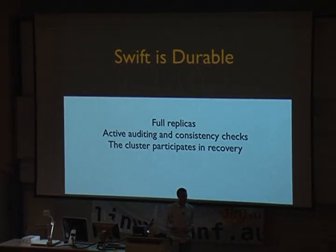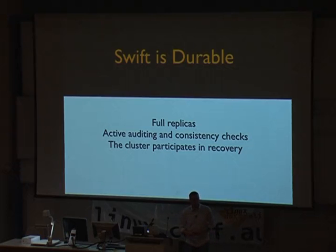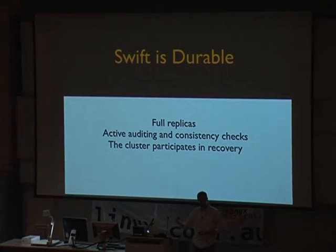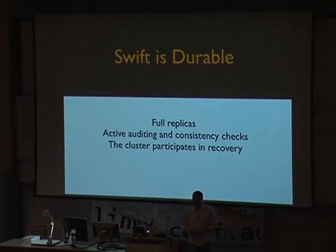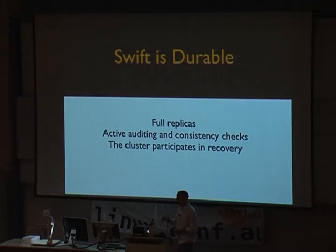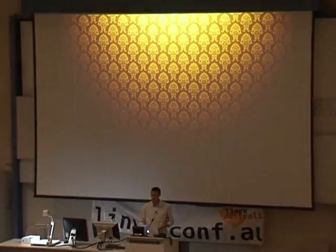Swift is durable, which really shouldn't need to be said because it's a storage system — that's kind of the table stakes. We achieve this by using full replicas of the objects. By default, although it is configurable on a per-cluster basis, Swift stores three replicas of your data. And it's actually a little smart about this, able to place each of these replicas onto distinct machines and, if you have it, even into distinct availability zones.